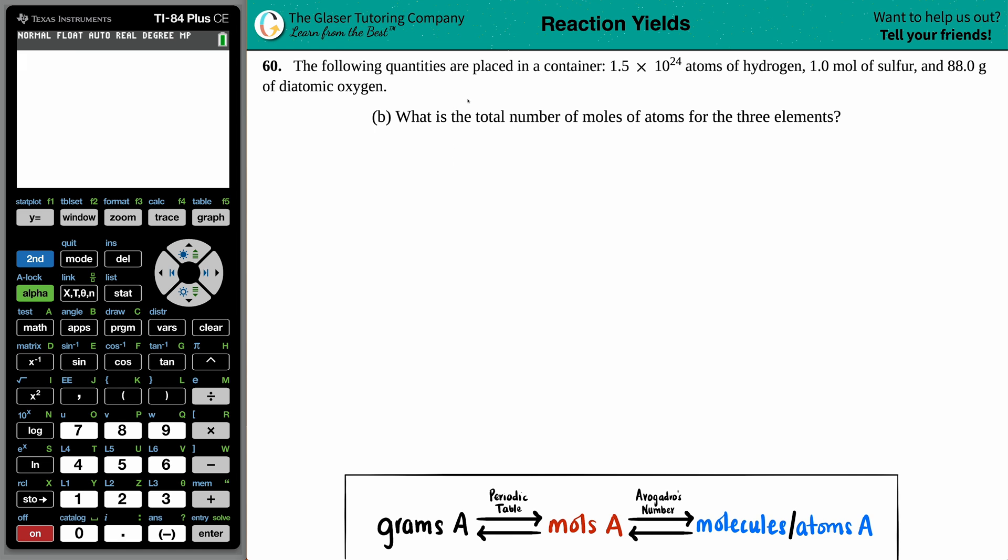Number 60. The following quantities are placed in a container: 1.5 times 10 to the 24th atoms of hydrogen, 1.0 moles of sulfur, and 88.0 grams of diatomic oxygen. Letter B asks: What is the total number of moles of the atoms for the three elements?